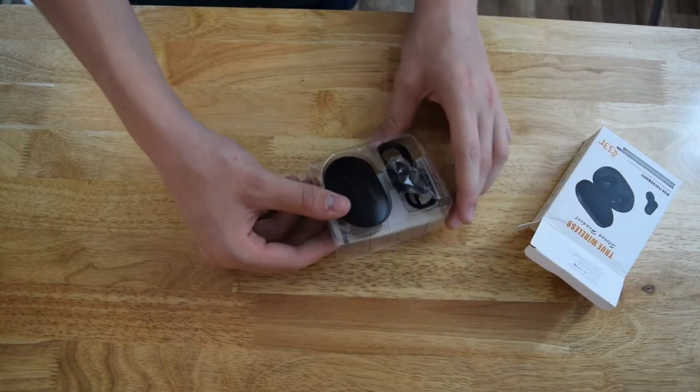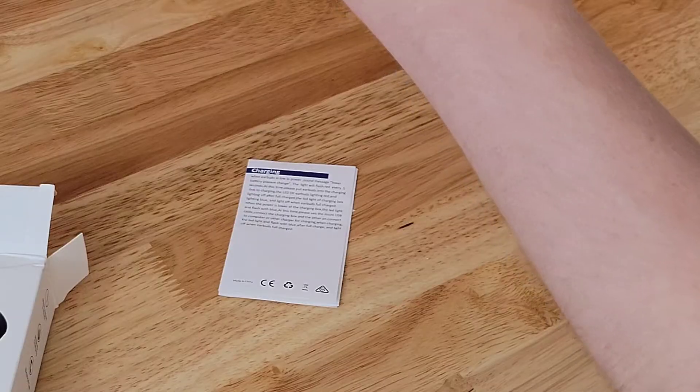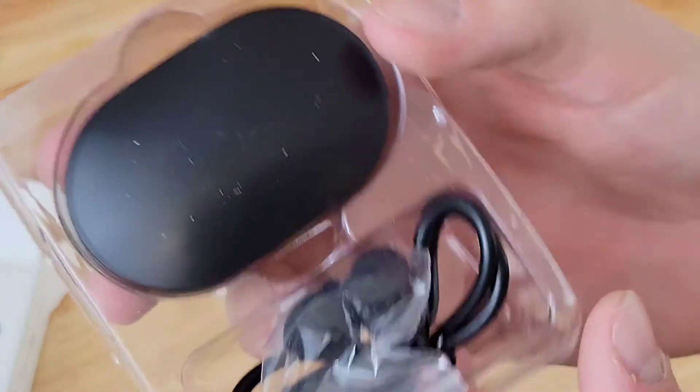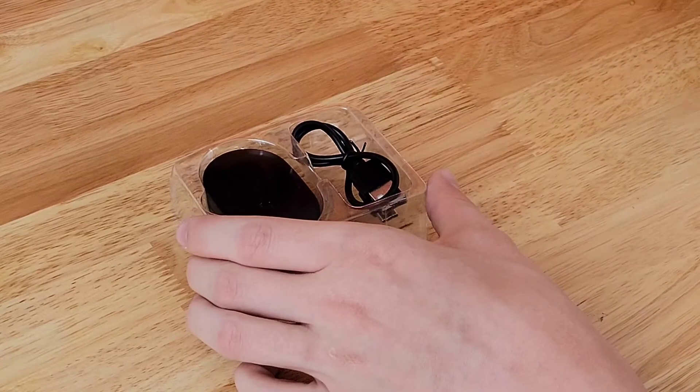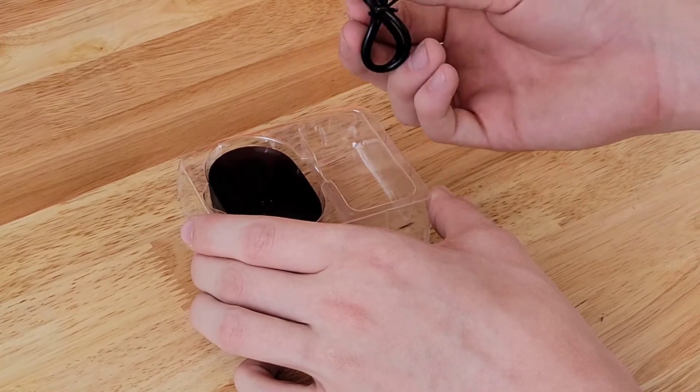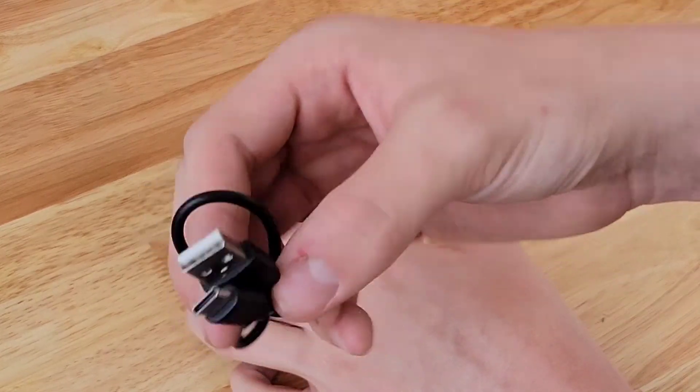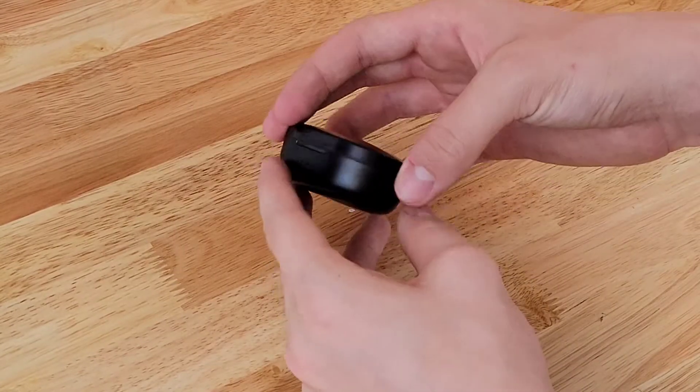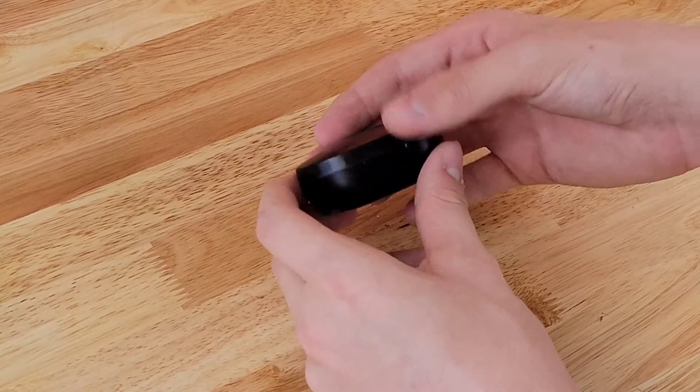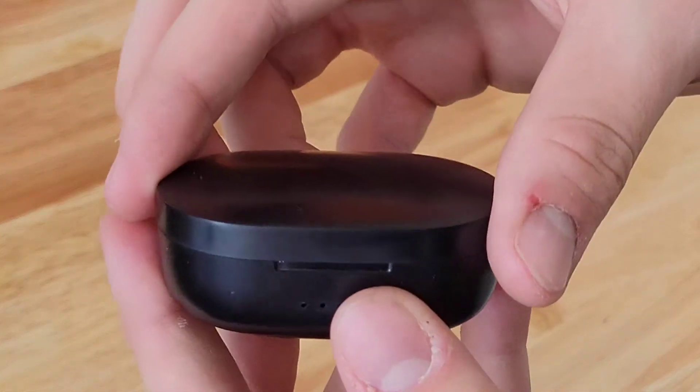I noticed when I first opened the earbuds they were covered in some kind of powder. Weird. Getting deeper into the box they do come with tips and a type C charger. Nice inclusion. As for the unboxing, I'll be giving these earbuds a 5 out of 10 only because it included the extra tips and the charger. The packaging was a little lacking.